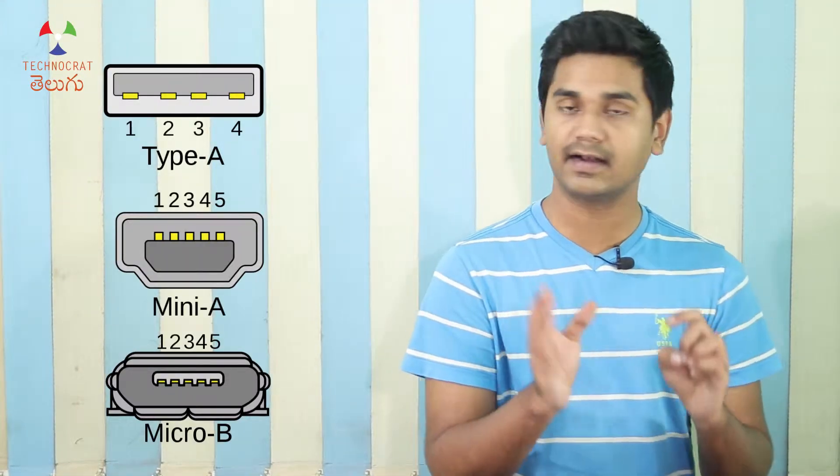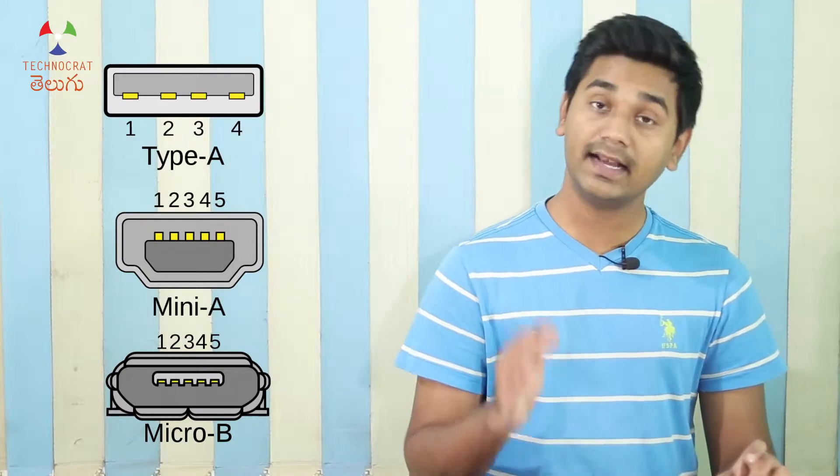You can see different connectors and their pin counts. If you have a standard USB 1.0 or 2.0 implementation, you can see 4 pins or 5 pins depending on whether it is A-type, Mini, or Micro type. If you have a USB 3.0 standard implementation, you can see additional pins.